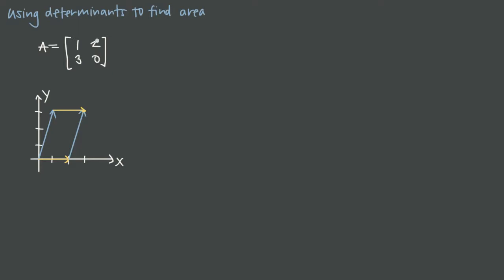In other words, we take the column vectors of the matrix, use them as adjacent sides of the figure, and whatever parallelogram they form, the area of that is given by the determinant of A. So if we call this parallelogram P, the area of P equals the absolute value of the determinant of A. We write it as the absolute value of det(A) rather than using the vertical-bar notation to avoid confusion between determinant bars and absolute value bars.